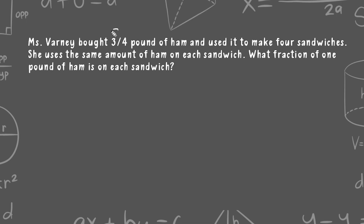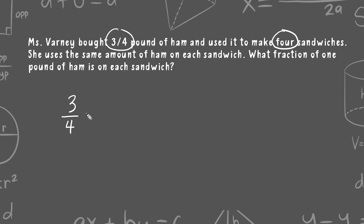We can see that we are starting with a total of three-quarters of a pound, and we have to use this amount to make four sandwiches. We're just taking this total and dividing it evenly amongst these four sandwiches. So let's take this total amount and divide it by four, and we're going to express four as a fraction by putting a one at the bottom.